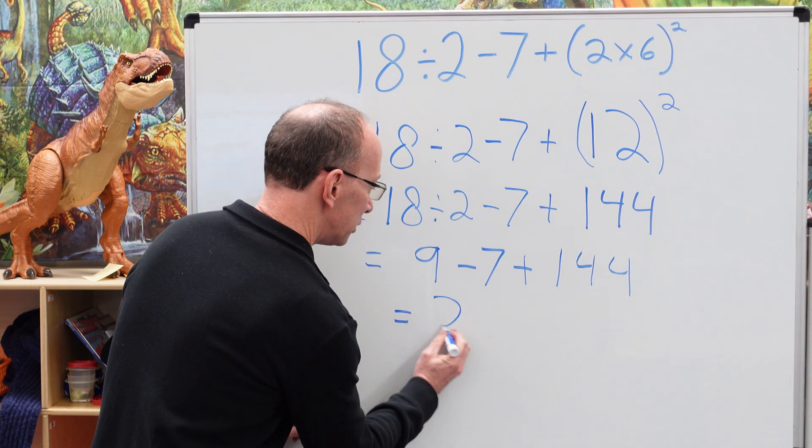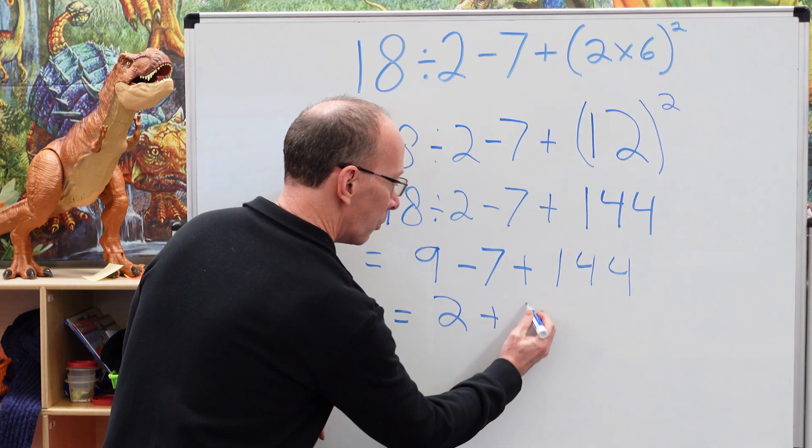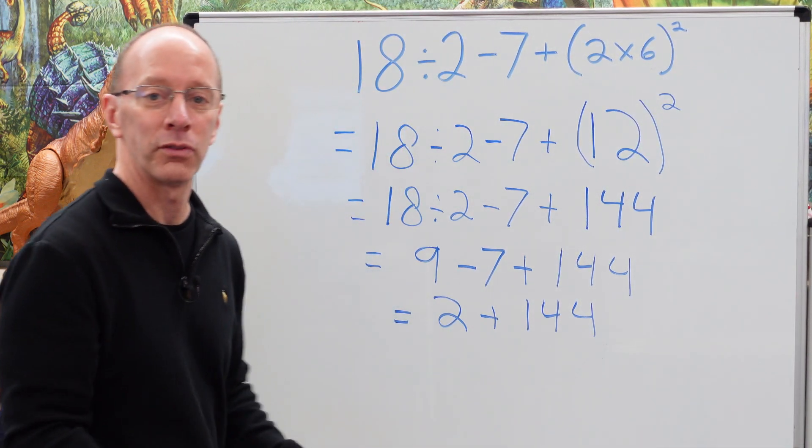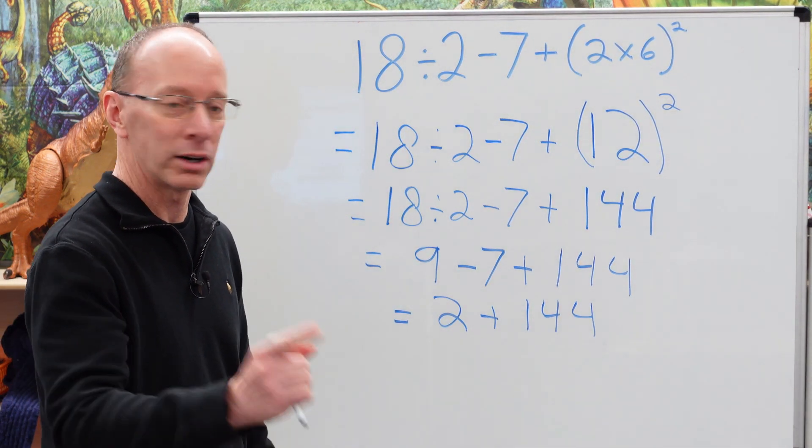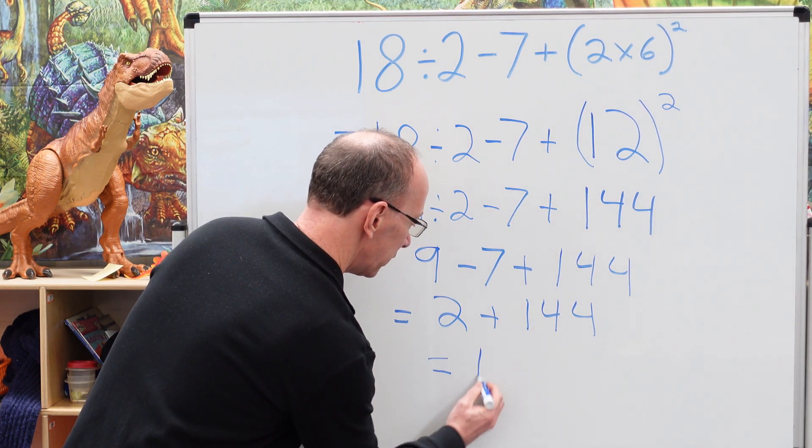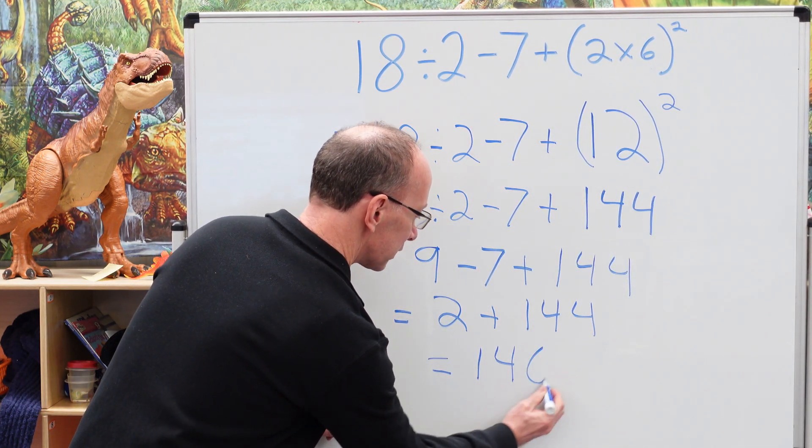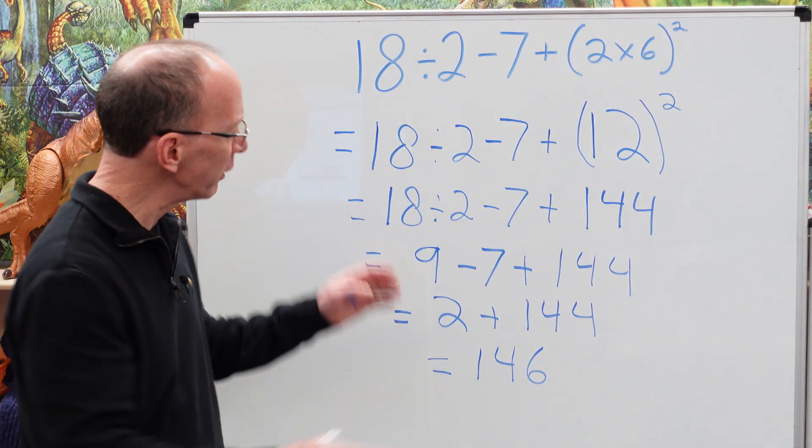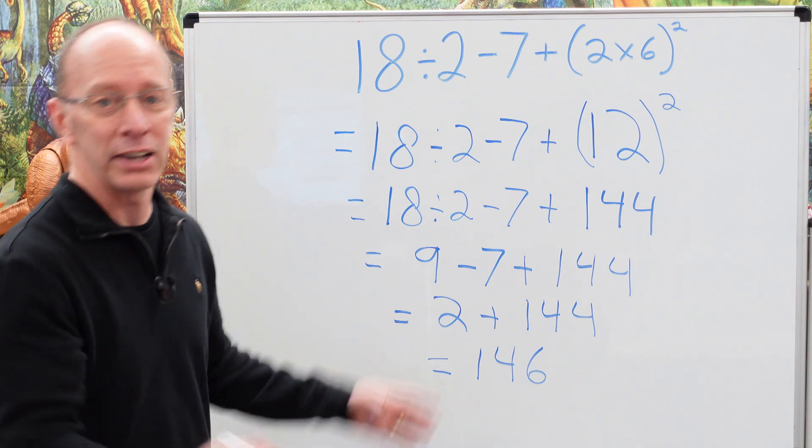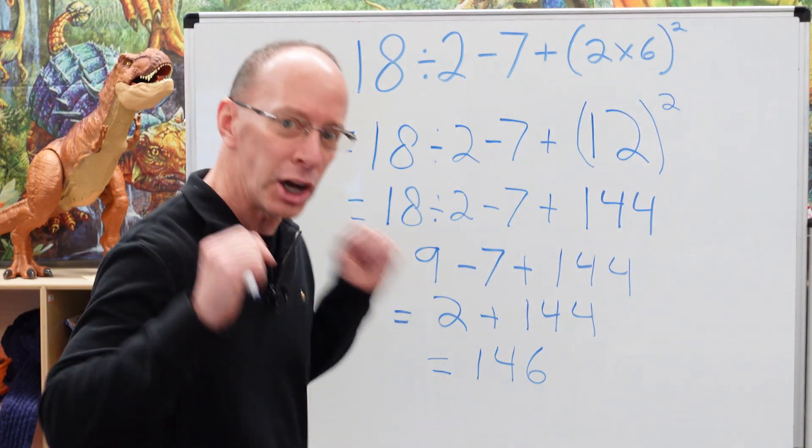We have 2 right here plus 144. 144 plus 2? 146 is the answer. 146. Now, just like yourself, always make sure you kind of look through the problem. Make sure you did it right. I think it looks good. Hey, you ready to do another challenging problem? Yeah. Let's do it.